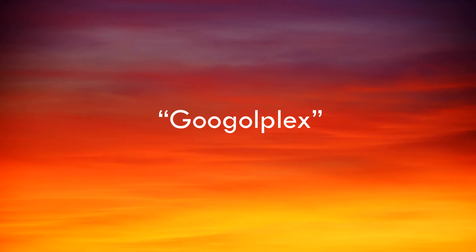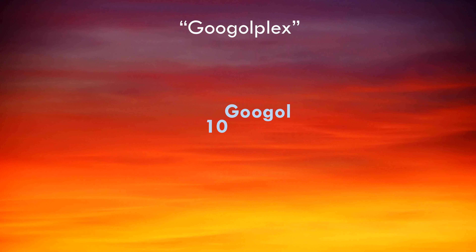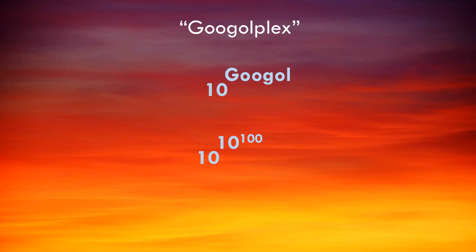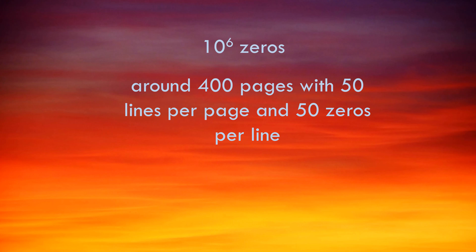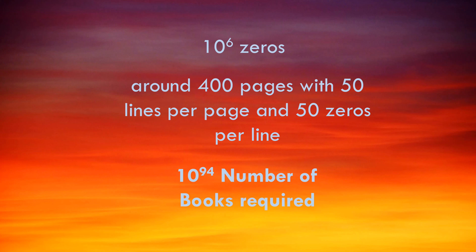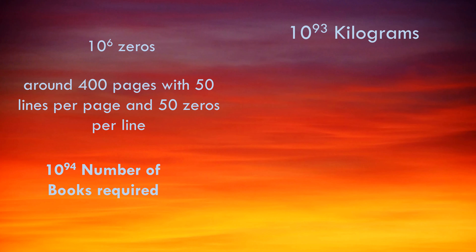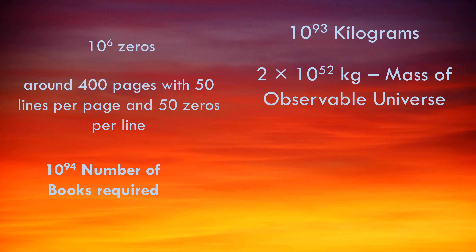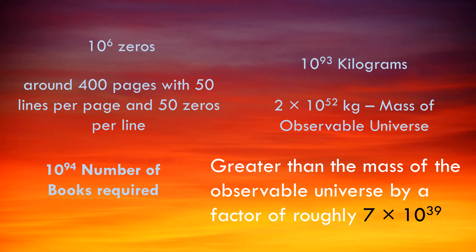Now, there also is something called Googolplex. It is 10 raised to the power of a Googol, or 10 raised to the power of 10 to the power 100. If we were to print a book with 400 pages, 50 lines per page and 50 zeros per line, it would contain 10 to the power 6 zeros. With this calculation, it would require 10 to the power 94 such books to print all the zeros of a Googolplex. If we consider the weight of each book to be 100 grams, then the total weight of books required to write all these zeros would be 10 to the power 93 kilograms. The total mass of the observable universe is estimated to be 2 times 10 to the power 52 kilograms, making the book mass greater than the observable universe by a factor of roughly 7 times 10 to the power 39.